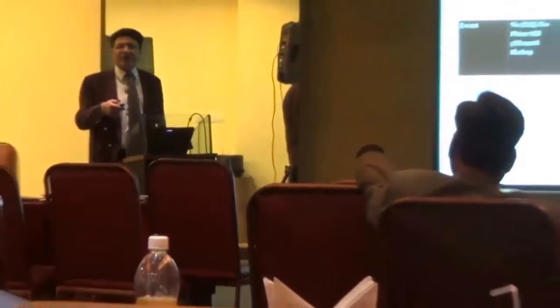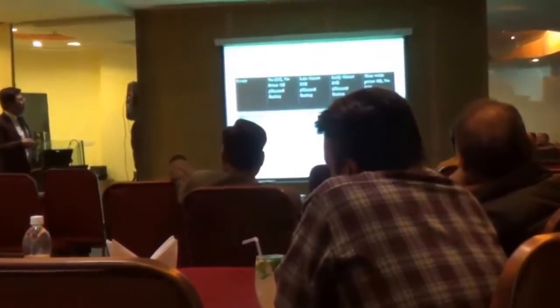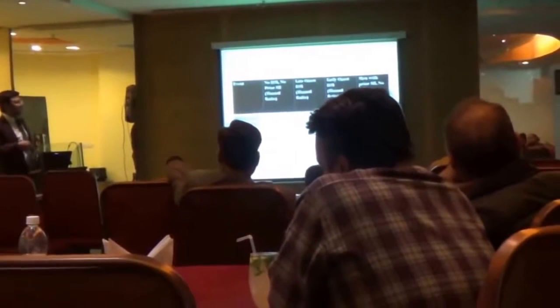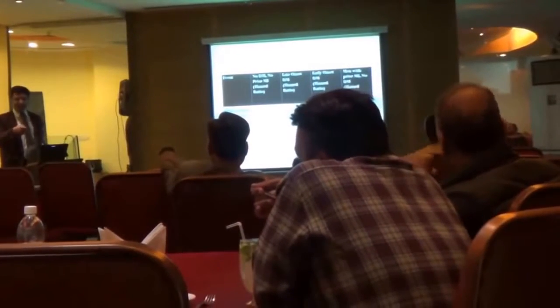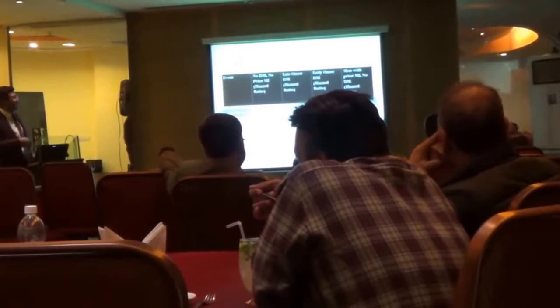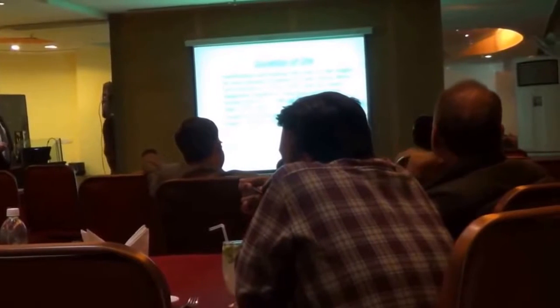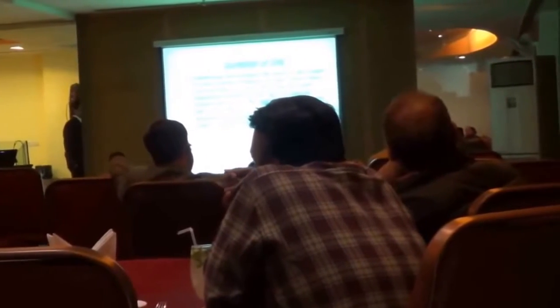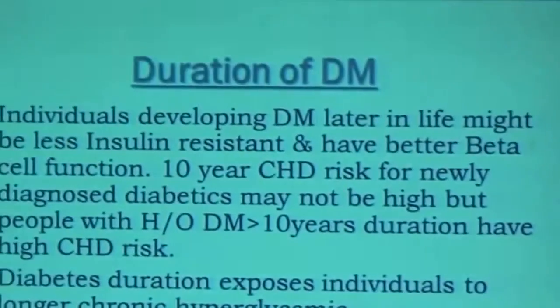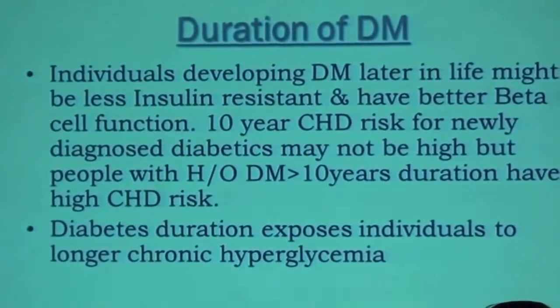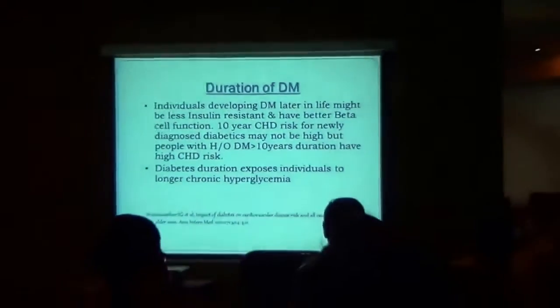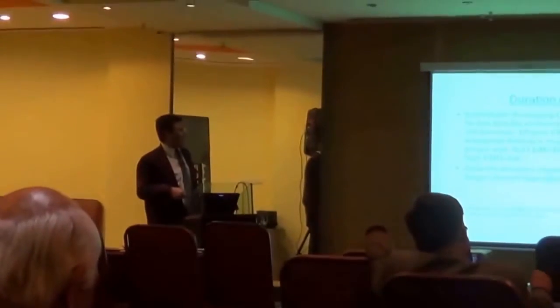Early-onset diabetes means a person developing diabetes at the age of 25, 30, or 35 years. Individuals developing diabetes later in life might be less insulin resistant and have better beta cell function. Therefore, the ten-year coronary heart disease risk for a newly diagnosed diabetic may not be as high.